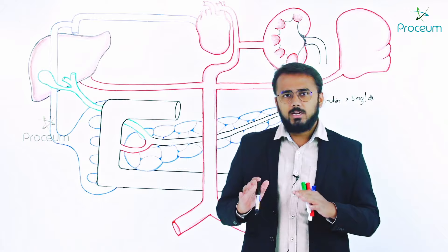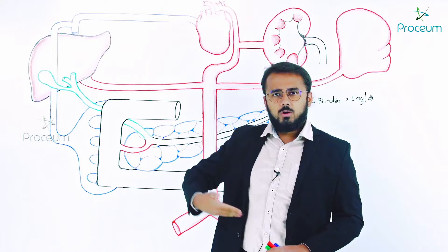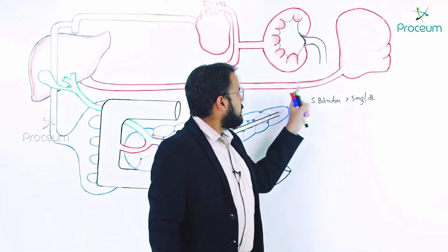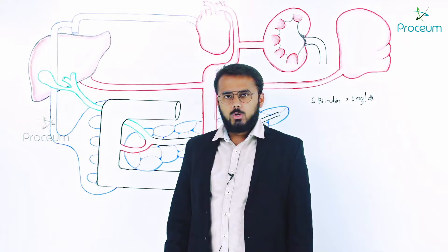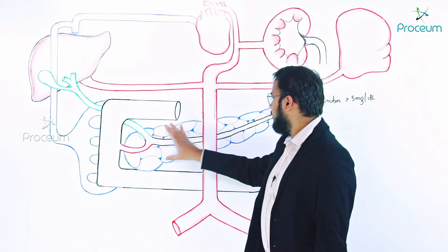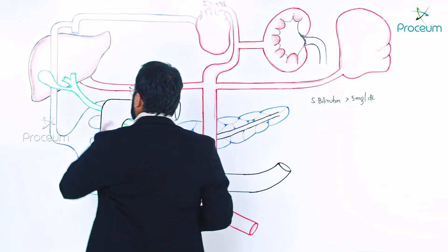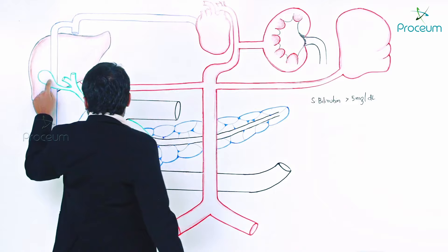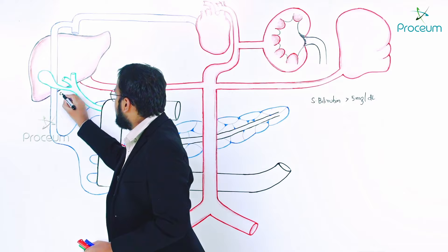Let me give an outline of the anatomy. In the right hypochondriac region is the liver, and in the left hypochondriac region is the spleen. This is the splenic artery and this is the hepatic artery. The C-shaped structure is the duodenum, and within its loop lies the pancreas. This here is the gallbladder, and coming out of the gallbladder is the cystic duct.